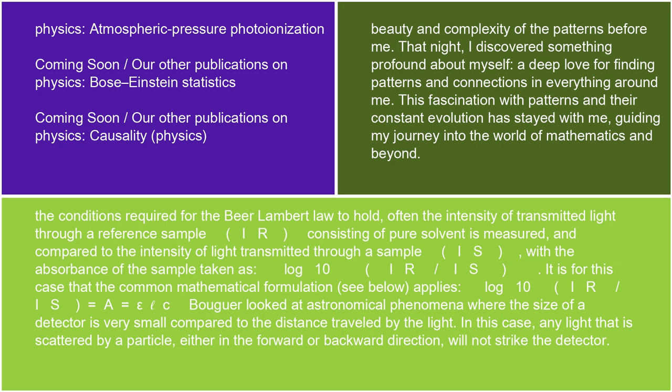Often the intensity of transmitted light through a reference sample IR, consisting of pure solvent, is measured and compared to the intensity of light transmitted through a sample IS, with the absorbance of the sample taken as log₁₀(IR/IS). It is for this case that the common mathematical formulation applies: log₁₀(IR/IS) = A = εCℓ.